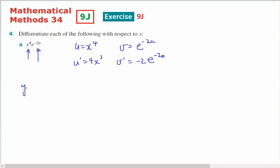So y dash is going to be u times v dash: minus 2, x to the power of 4, e to the minus 2x, plus v times u dash, which will be 4x to the power of 3, e to the minus 2x.